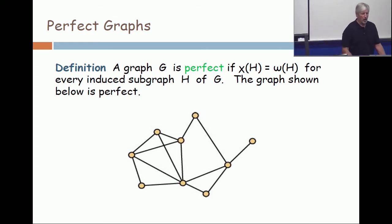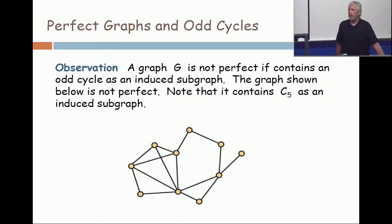Let me show you a graph which is not perfect. And we observe that any graph which contains an odd cycle as an induced subgraph is not perfect. So I've made a really modest change in this graph. The first one was perfect. This one is not perfect.